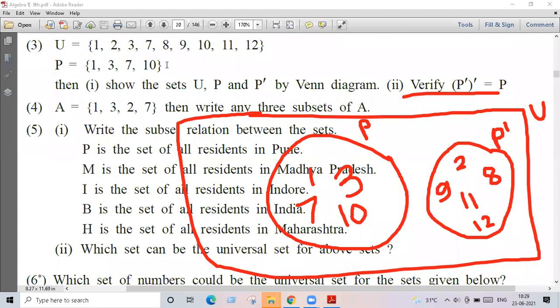So you can write the set complement of P. P prime is equal to two comma eight comma nine comma eleven comma twelve.